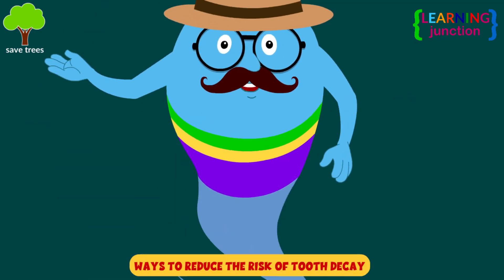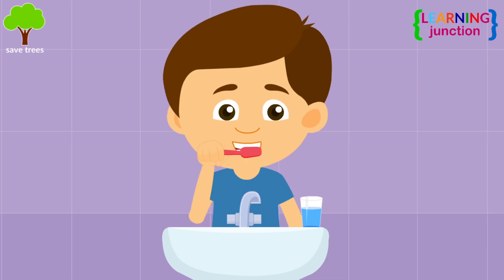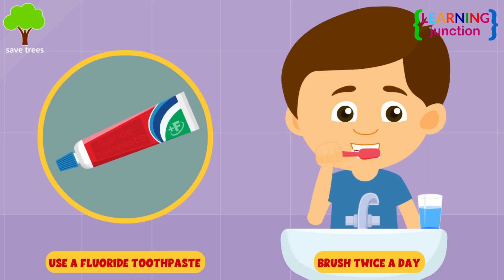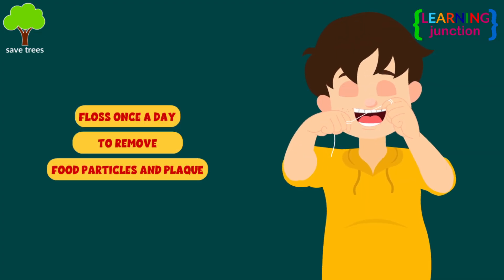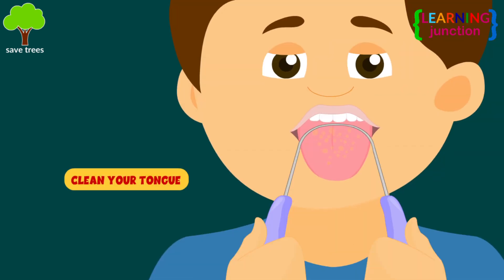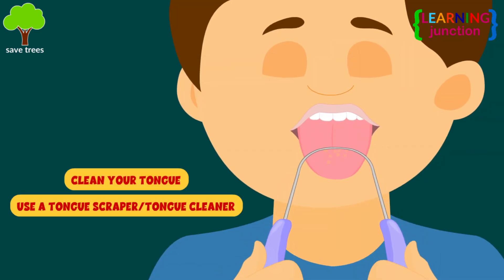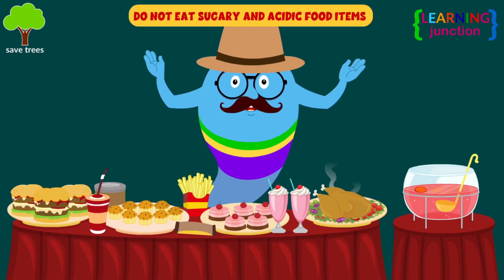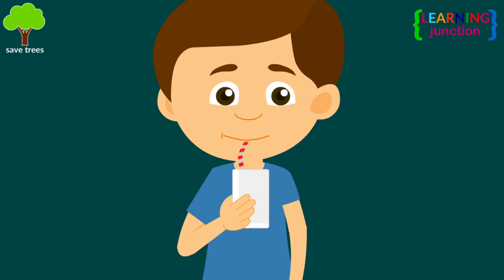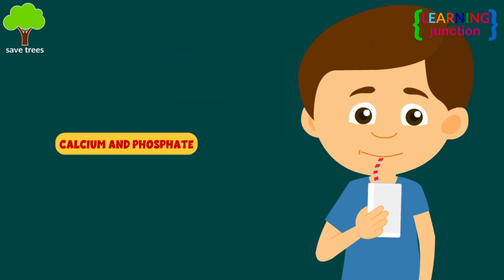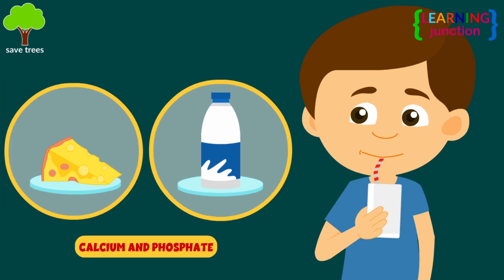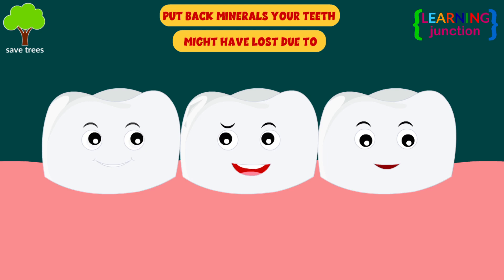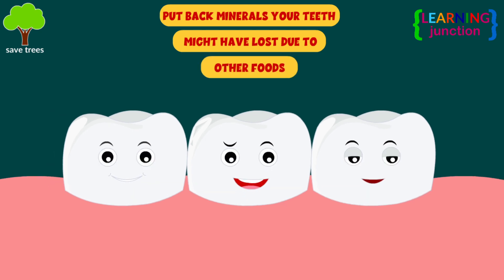You can reduce the risk by doing the following: brush your teeth at least twice per day with a fluoride toothpaste; floss once a day to remove food particles and plaque; clean your tongue every day with a scraper or cleaner; don't eat sugary and acidic food items. Milk is very good for dental health. The calcium and phosphates in milk, cheese, and other dairy products help put back minerals your teeth might have lost due to other foods.